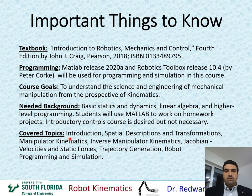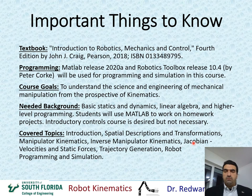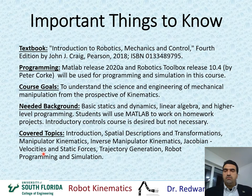The topics covered in this course include, after the introduction: spatial descriptions and transformations, manipulator kinematics — which covers forward kinematics and then inverse kinematics — Jacobian including velocities and static forces, and trajectory generation. I'll cover trajectory generation before the Jacobian because we need it for simulation. Throughout the whole course we'll also be covering programming and simulation, with each chapter having a segment dedicated to programming.